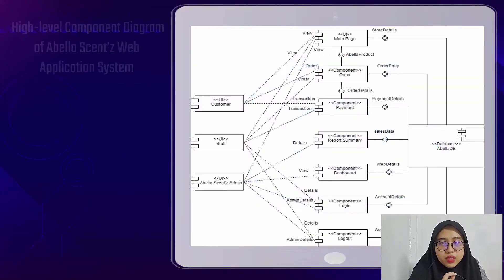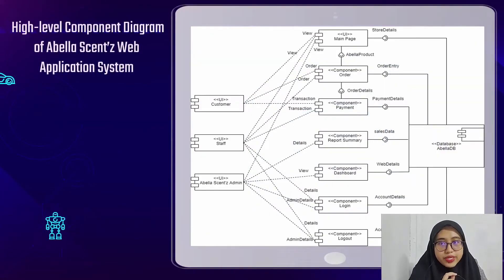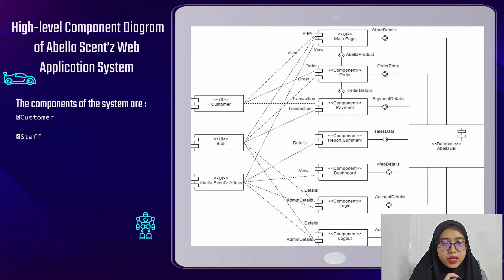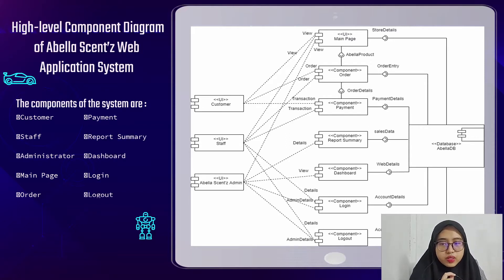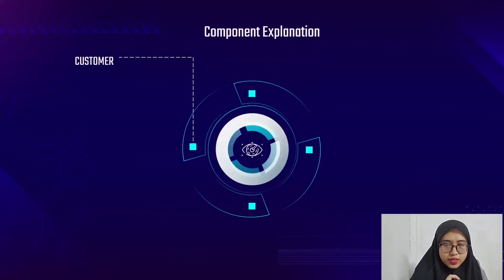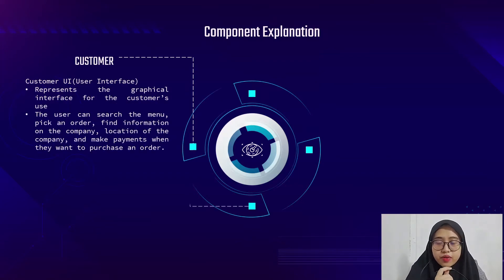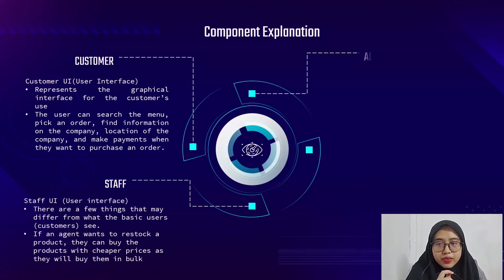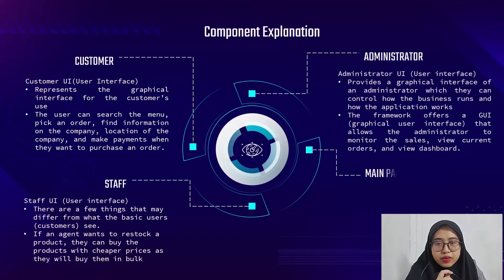The high-level component diagram of the web application consists of 10 components: customer, staff, administration, main page, order, payment, report summary, dashboard, login, and logout. These 10 components represent a graphical interface for customer use. The user can search the menu, pick and order, find information on the company's page, and make payment when they want to purchase an order.